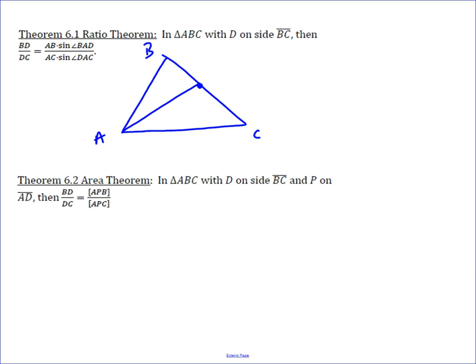D somewhere on side BC, then BD over DC is equal to AB over AC times the sine of angle BAD over the sine of angle DAC.